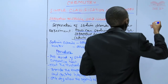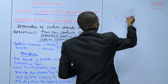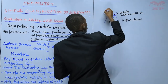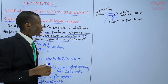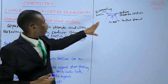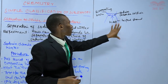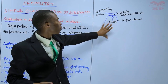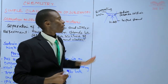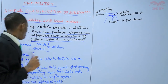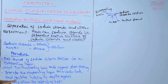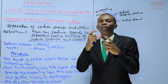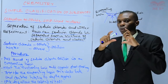We are going to start with the evaporating basin. You have the evaporating basin containing sodium chloride solution. This evaporating basin is on a tripod stand and you are heating it. You heat until the crystals start forming — the point at which you start seeing some solid particles; those are now crystals.